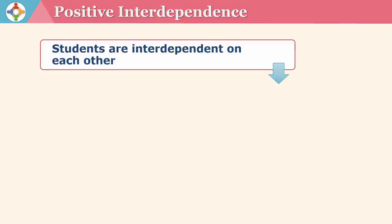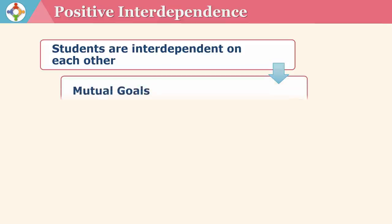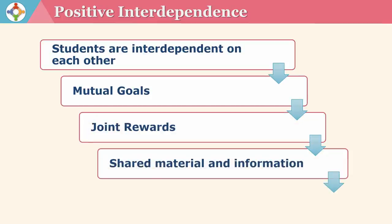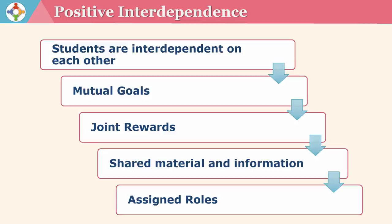Students must feel that they need each other in order to complete the group task — only then can we have positive interdependence. Positive interdependence can be established by having mutual goals, joint rewards, shared materials and information, and by assigning definite roles to the students.